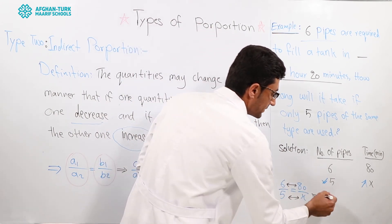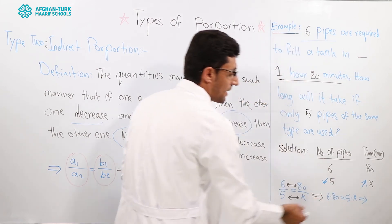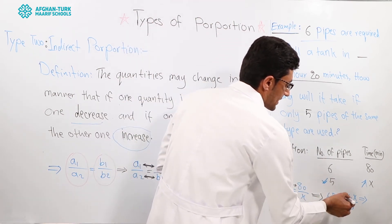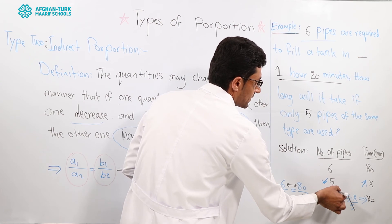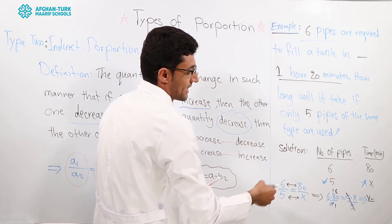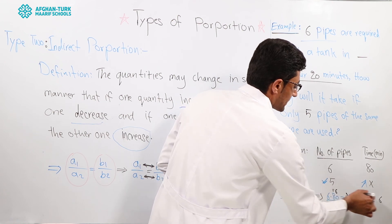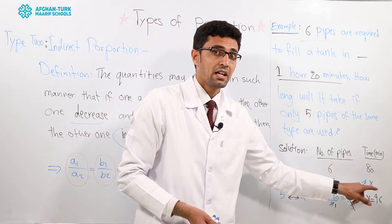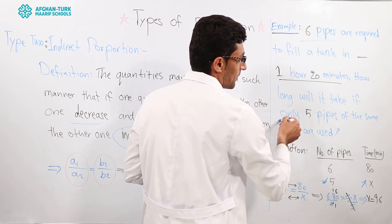Six multiple eighty is equal to five multiple x. After the solution, if we divide by five, this five will be cancelled and x will be... I can simplify. One and thirty is in here, it will be sixty. Six multiple sixty, ninety-six. The answer will be ninety-six. It means that you need ninety-six minutes in order to solve this problem, in order to complete the job.